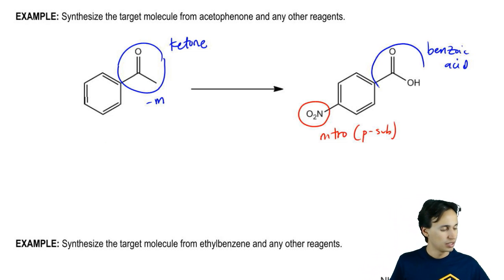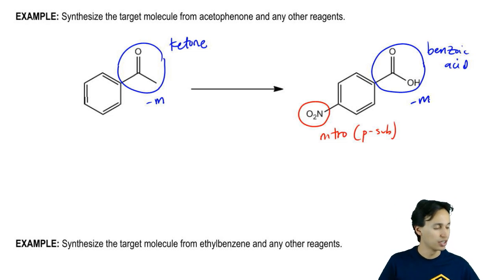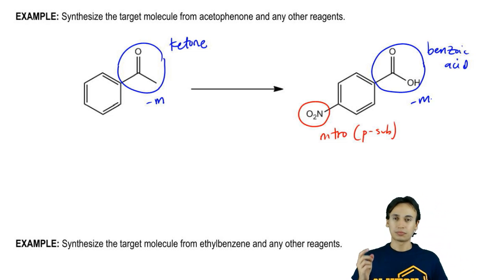Now benzoic acid, is this an ortho para director? No. This is also a meta director. That means that I have to turn this into a benzoic acid sometime after I've added the nitro group because if I just turn it straight into benzoic acid, then I'm going to get a meta nitro group again. This is already outlining all the things we need to do.